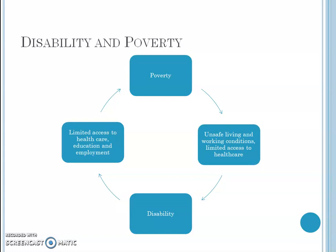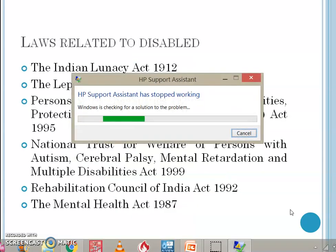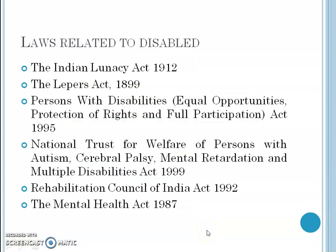There are various laws made by the government for disabled people — the Indian Lunacy Act 1912, the Lepers Act 1899, the Persons with Disability (Equal Opportunity, Protection of Rights and Full Participation) Act 1995, the National Trust for Welfare of Persons with Autism, Cerebral Palsy, Mental Retardation and Multiple Disability Act 1999, the Rehabilitation Council of India Act 1992, and the Mental Health Act 1987.